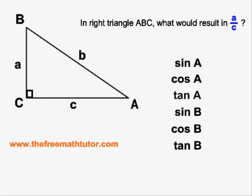We don't include sine of C, cos of C, or tan of C, because C in this case is the 90 degree angle. And with the SOHCAHTOA formulas, we don't do the sine, the cos, or the tan of the 90 degree angle.